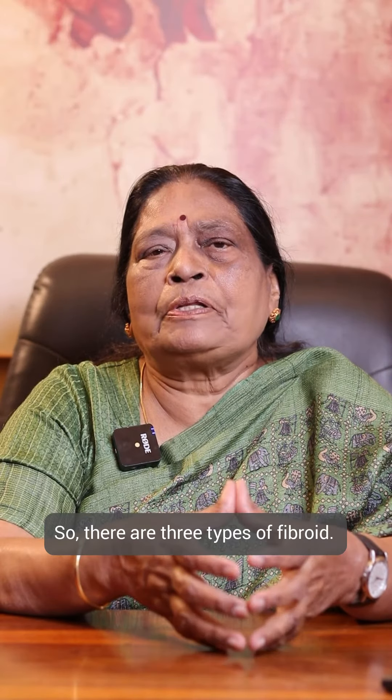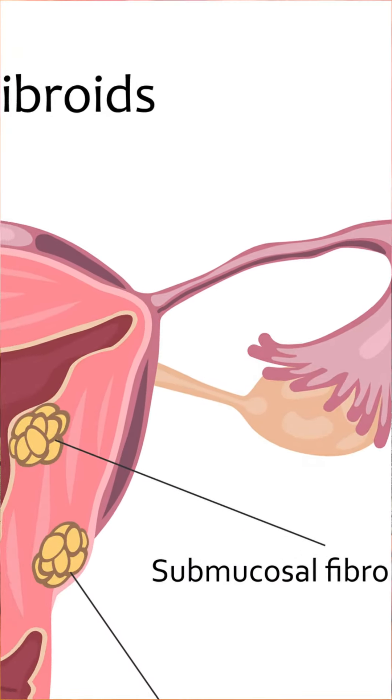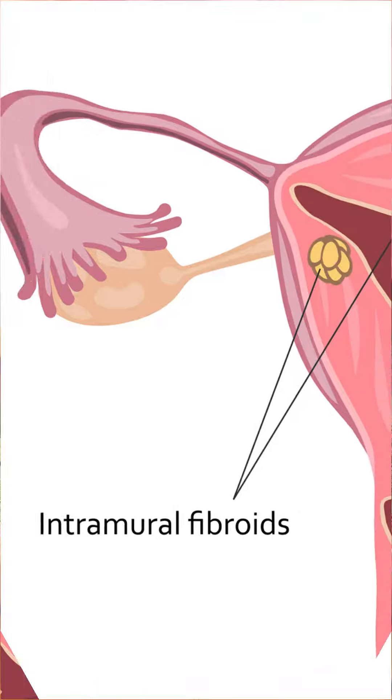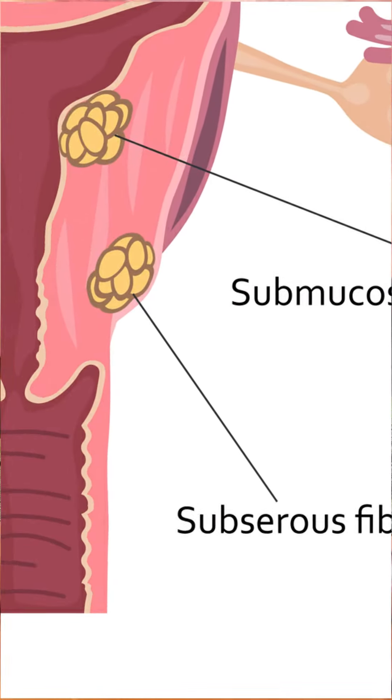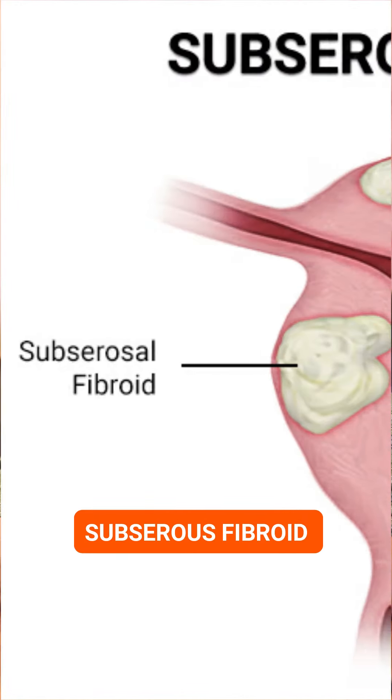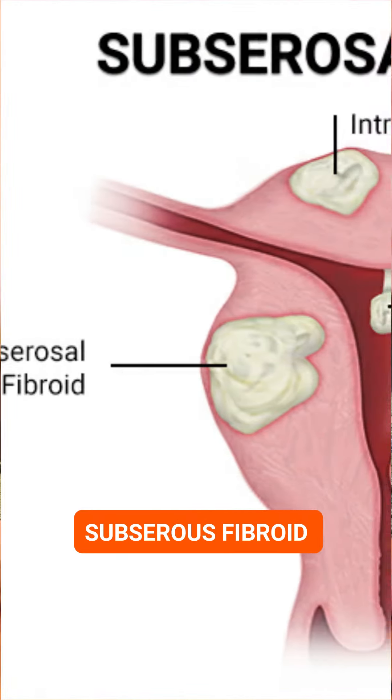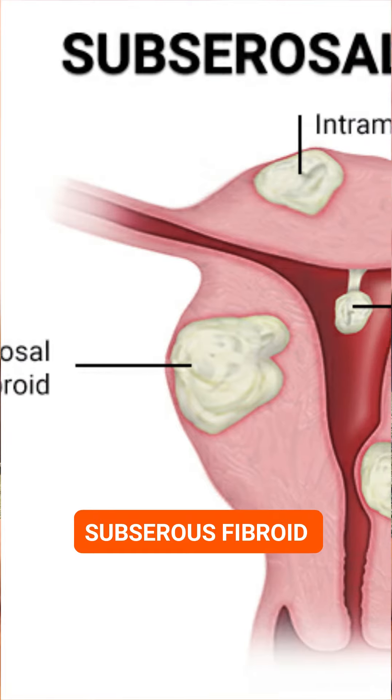We have three types of fibroids. One is submucous fibroids, intramural fibroids, and subserosal fibroids. Subserosal fibroids are very large.